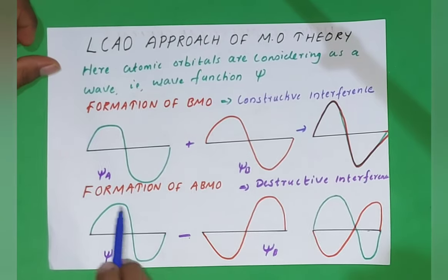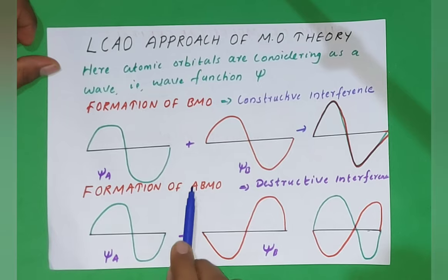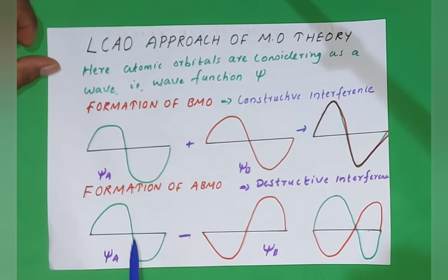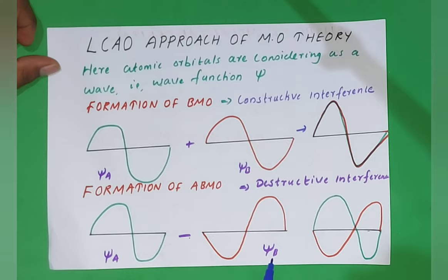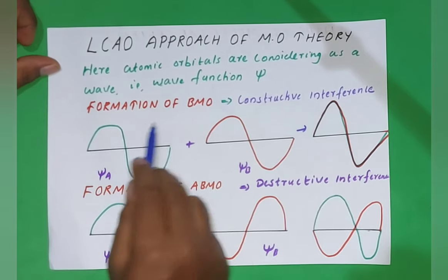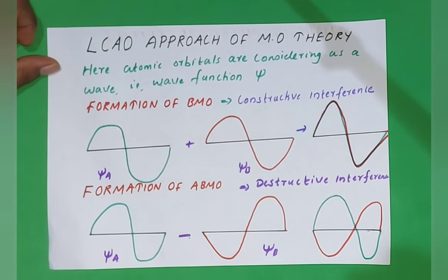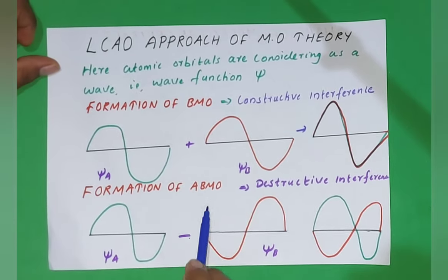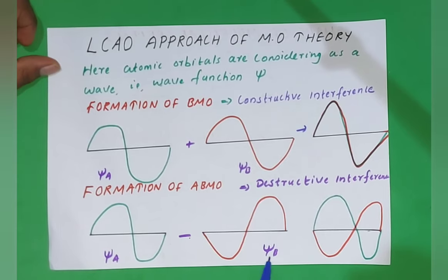The formation of ABMO — that is the antibonding molecular orbital — is formed by destructive interference. ψA, the atomic orbital of the first hydrogen atom, and ψB, the atomic orbital of the second hydrogen atom, are combining in a destructive way, that is ψA minus ψB. In the case of BMO formation it was ψA plus ψB, and for ABMO it is ψA minus ψB.